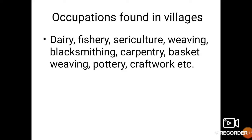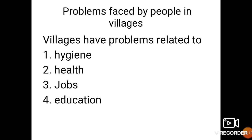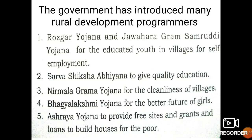Agricultural activities are totally dependent on rain. Now let us see the problems faced by people in rural community. Villages have problems related to hygiene, health, jobs, and education. In order to solve these problems, the government has introduced many rural development programs, such as Ashraya Yojana, which provides free sites and loans to build houses for the poor.